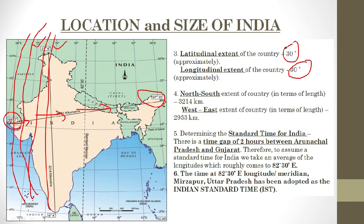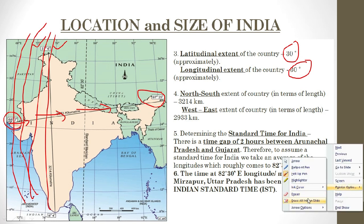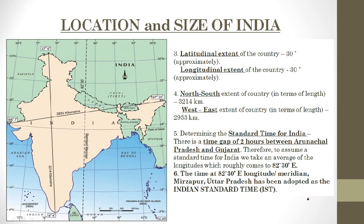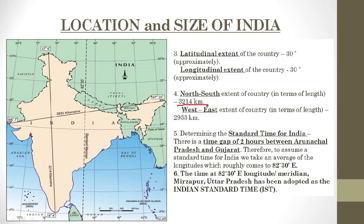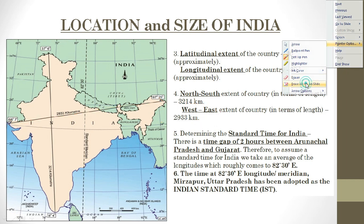Now let us learn the latitudinal and longitudinal extent in terms of area — here we will call it the north-south and east-west extent. The north-to-south length stretches around 3,214 kilometers. In the same way, the west-to-east extent of the country is around 2,933 kilometers.